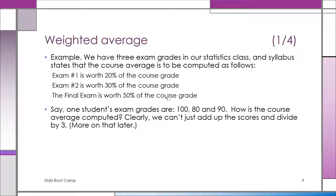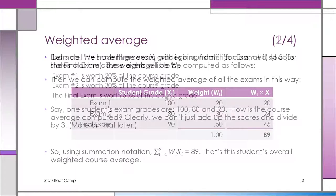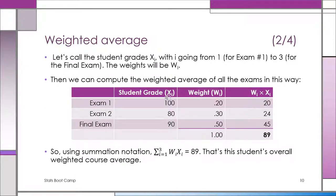And now we have one student whose grades were 100, 80, and 90. So how do we compute the average? We set it up in a table so you can see the grade, the weights, and you can see the weighted average is now an 89.